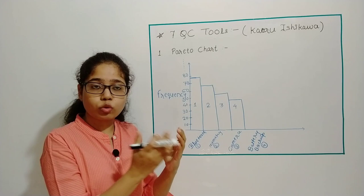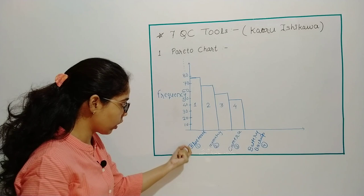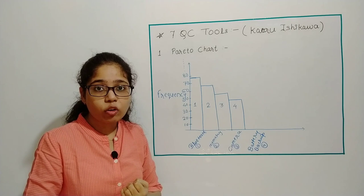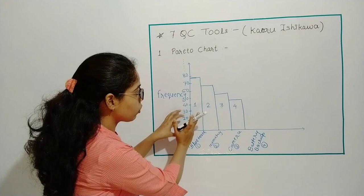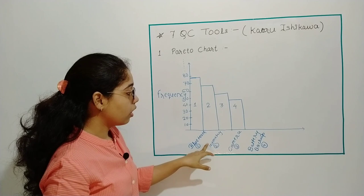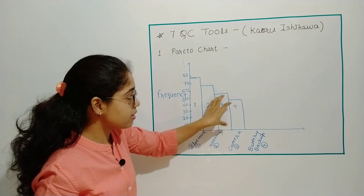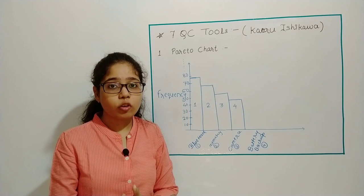If we have a number of defects, it will be graphically represented. And when the product has the most defective aspects, we will work and minimize it so that we can improve the quality of that particular product. Then I will focus on each defect to minimize the defects and improve the quality.